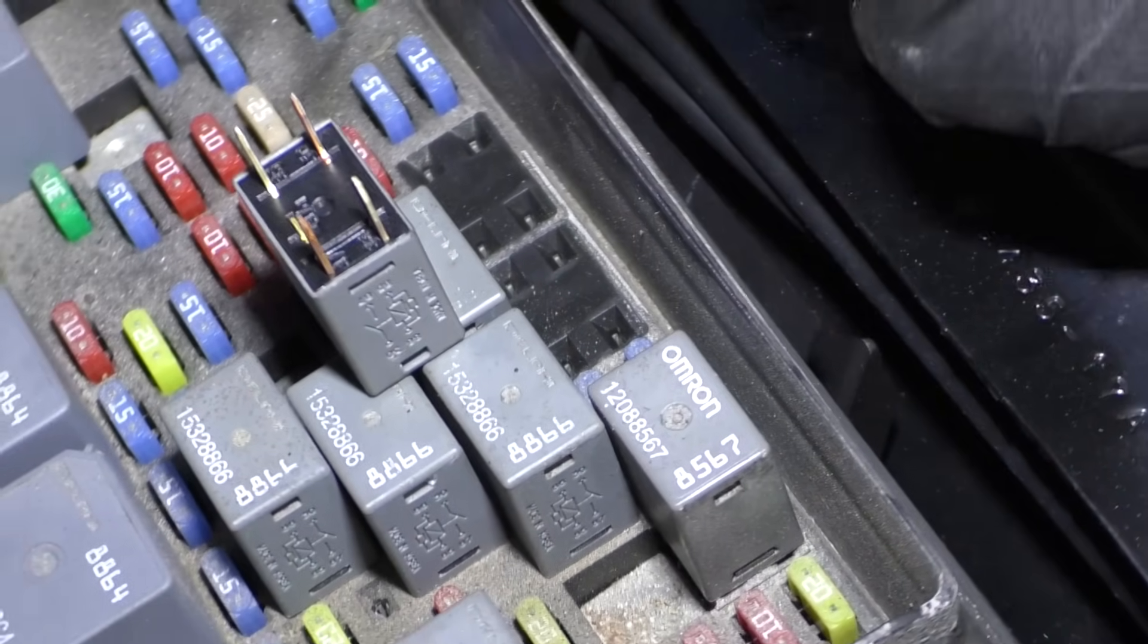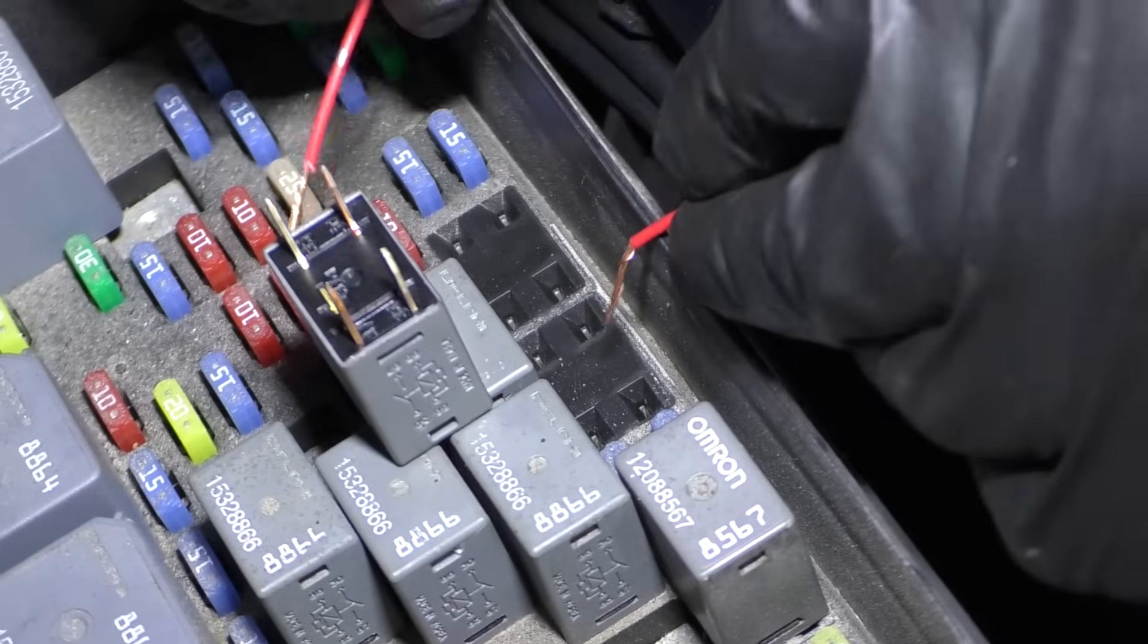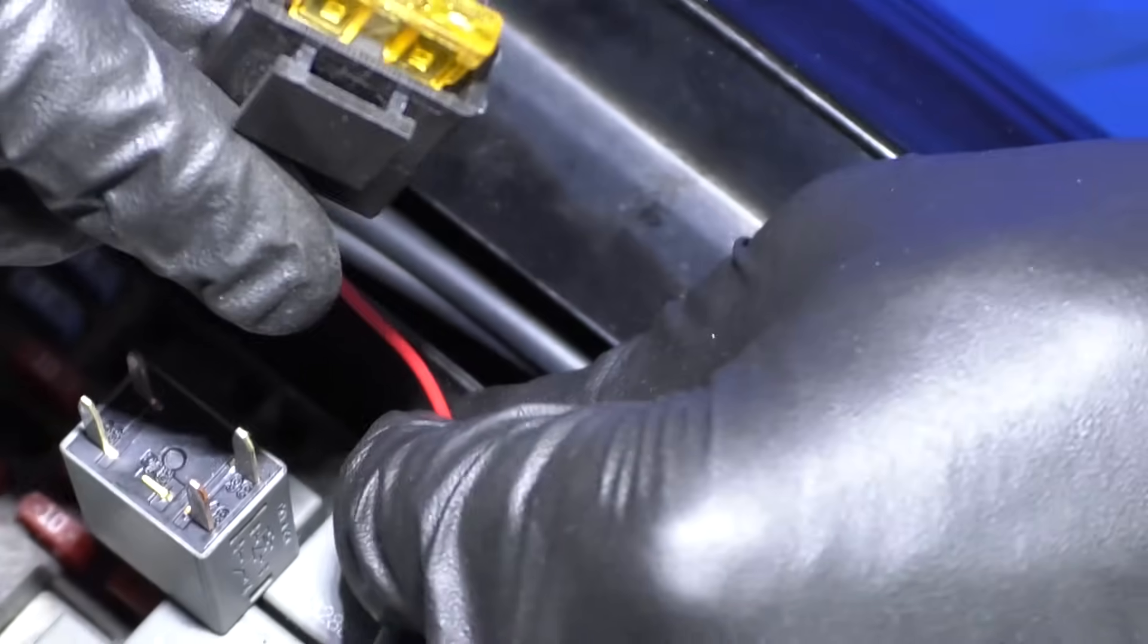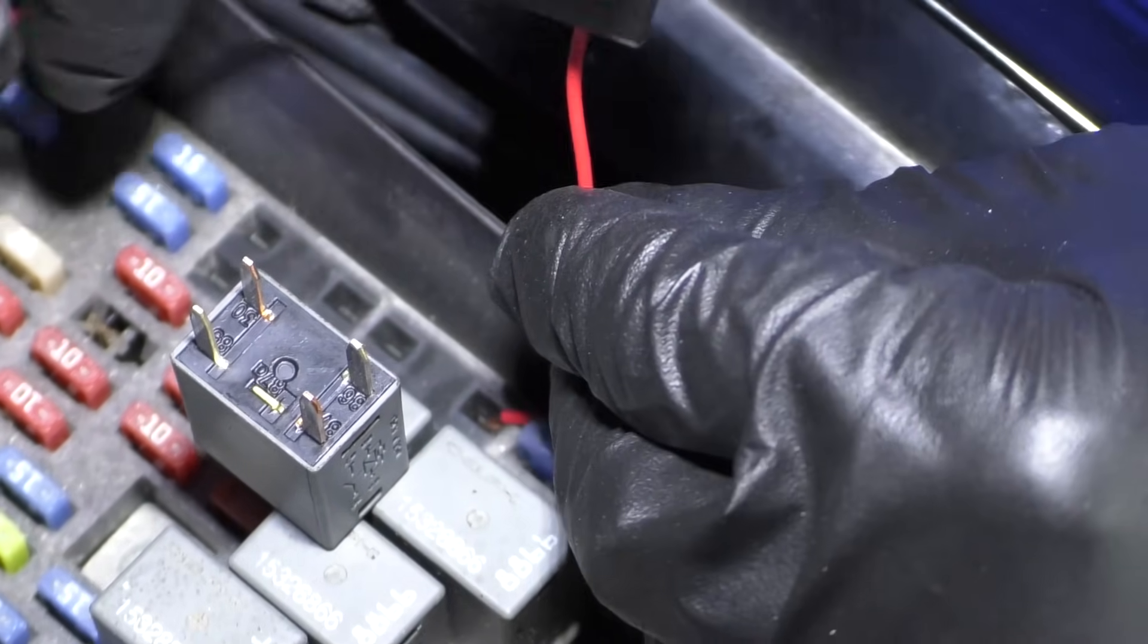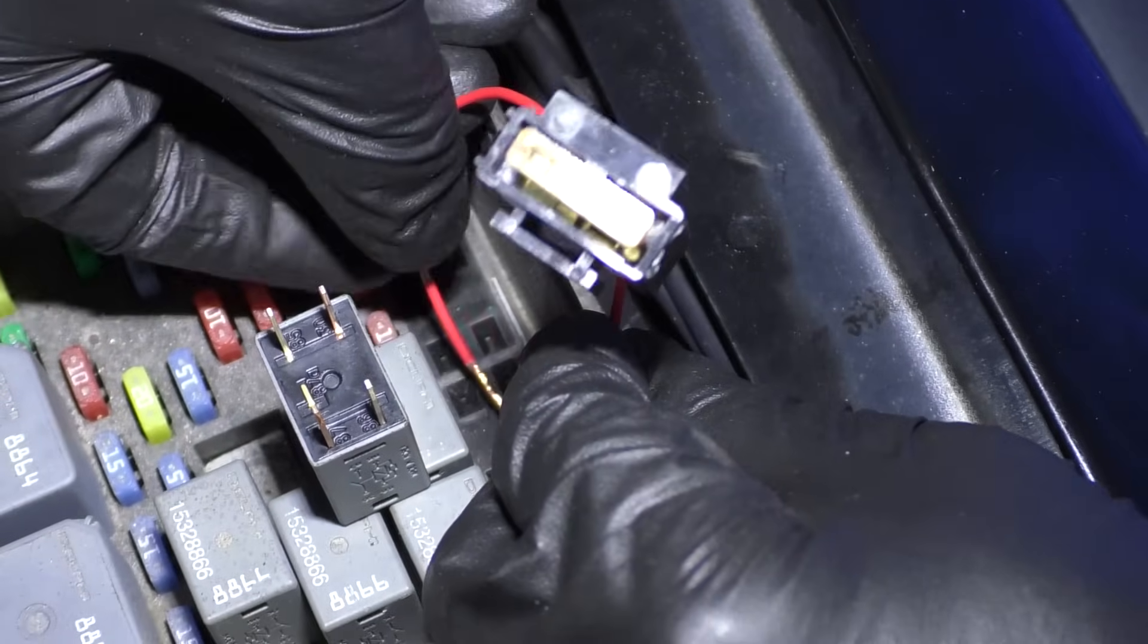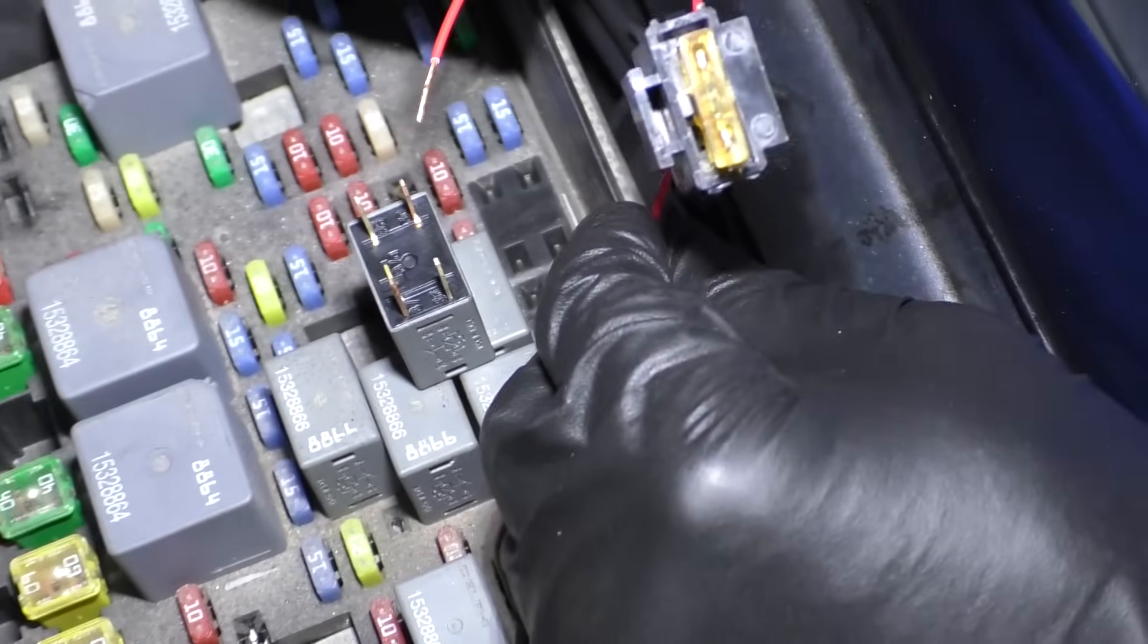So 30 is here, 87 here. So we'll start with 87 because there's no power on 87. Put the jumper harness in there, and then put this side in 30 and just do it quick. And there you go.